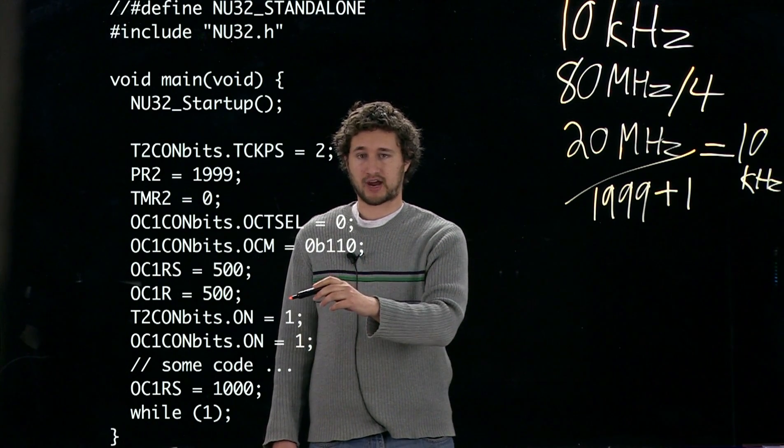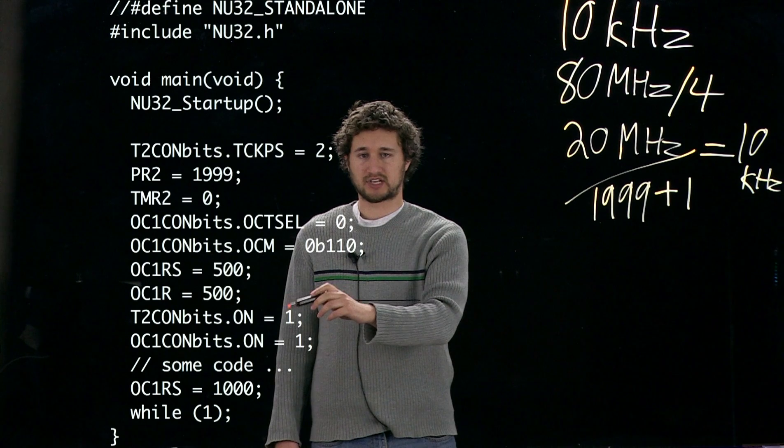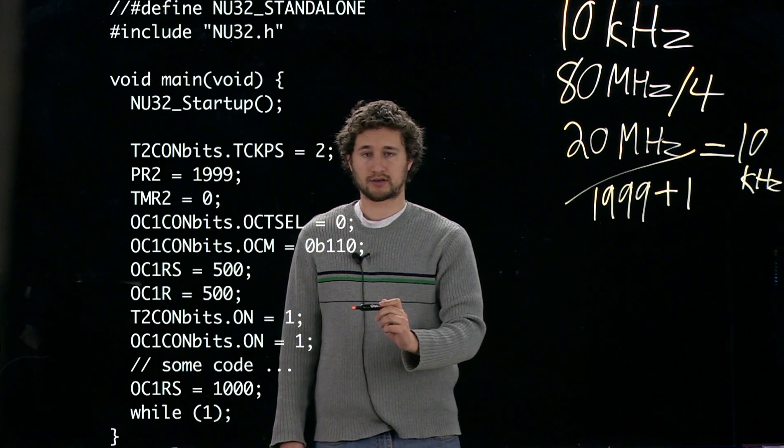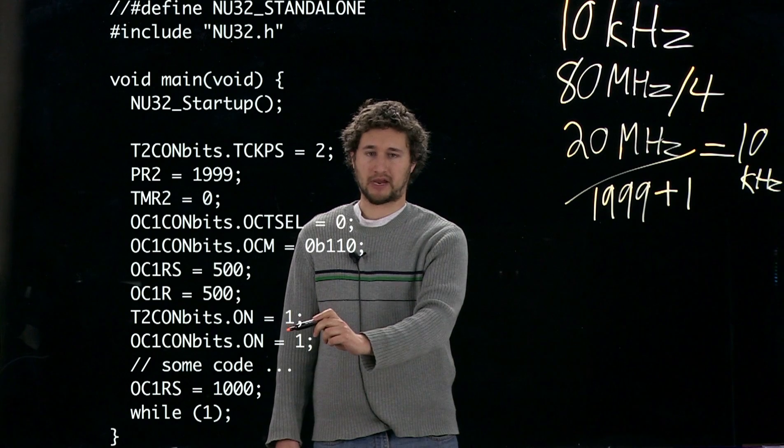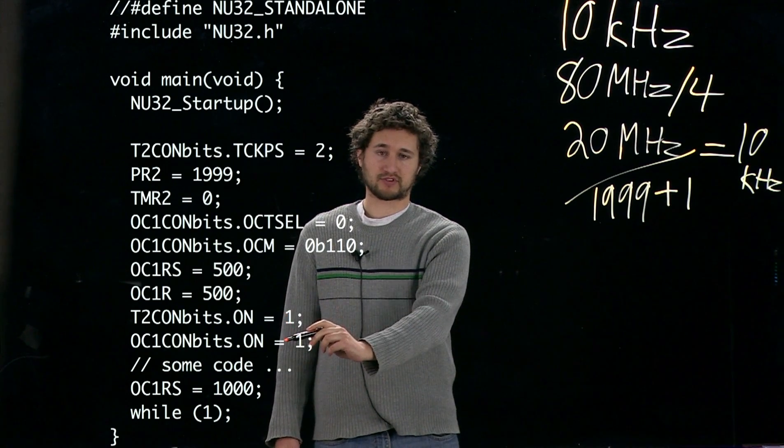Finally, we want to start timer 2 by setting T2ConBits.ON equal 1. And we also want to turn on the output compare code. That's what this line does.